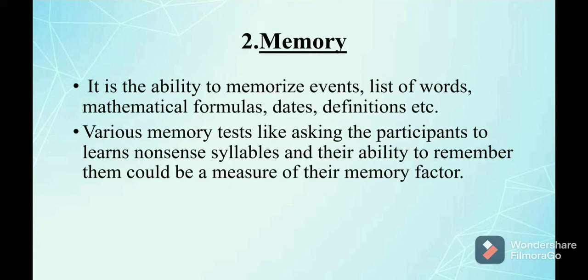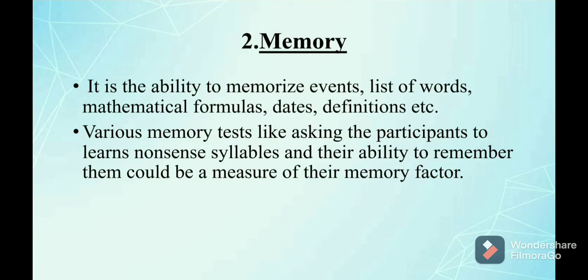The second primary mental ability is memory — the ability to memorize and recall. It is the ability to memorize events, lists of words, mathematical formulas, dates, definitions, etc. It refers to the ability to quickly memorize various concepts and retain them for a longer period of time. Memory tests, such as asking participants to learn nonsense syllables and recall them, measure this factor. The ability to recall learned concepts during exams is largely dependent on this primary mental ability.